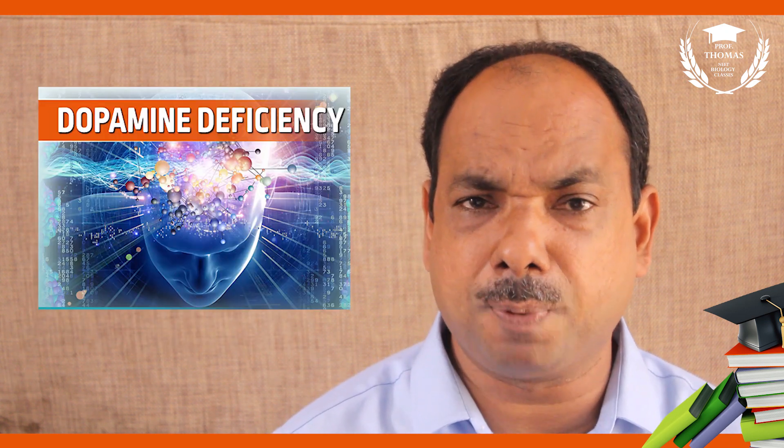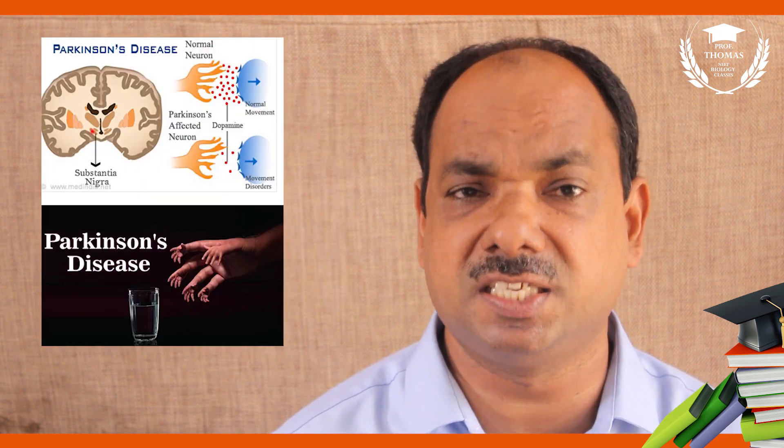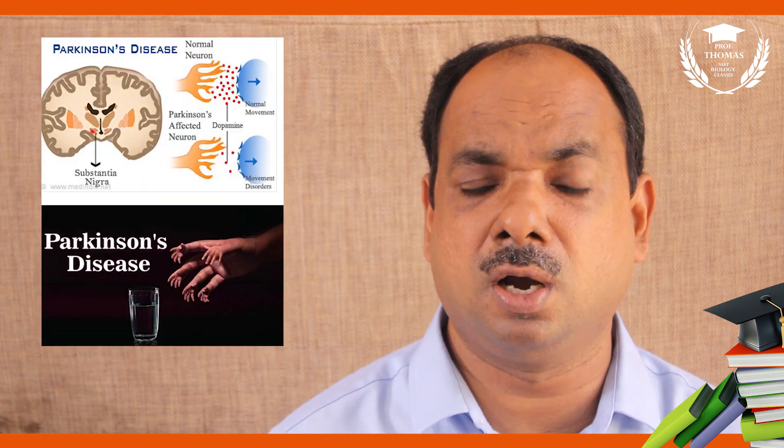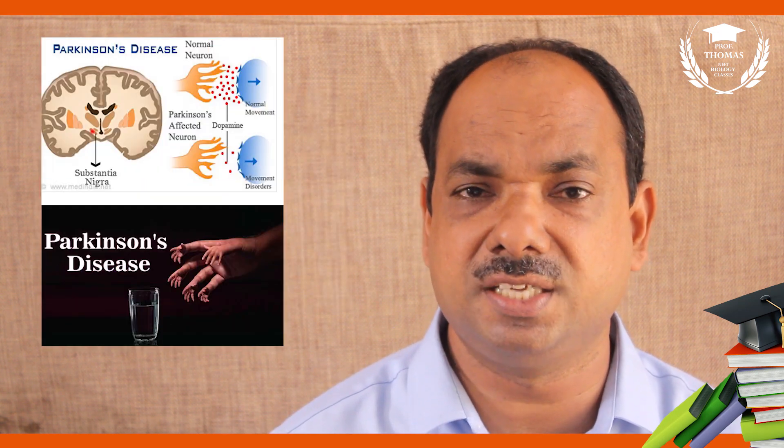GABA is a well-known neuro-inhibitor. Dopamine deficiency leads to Parkinson's disease. Many psychological and neurological diseases are associated with neurotransmitters.